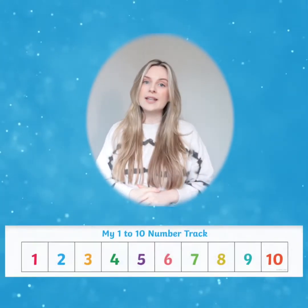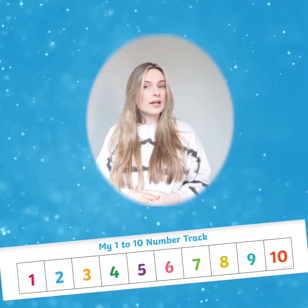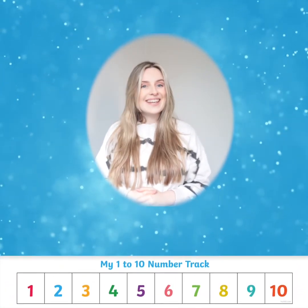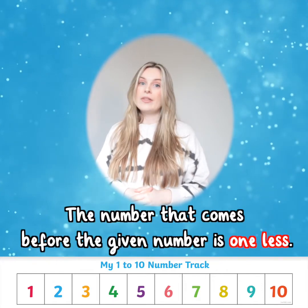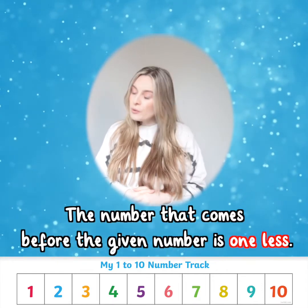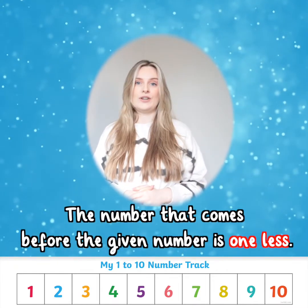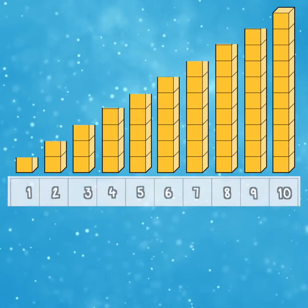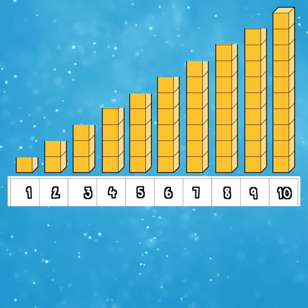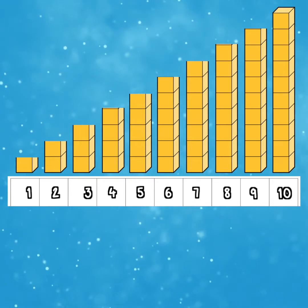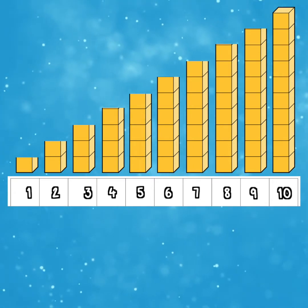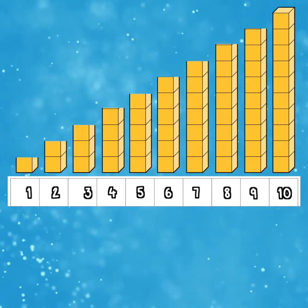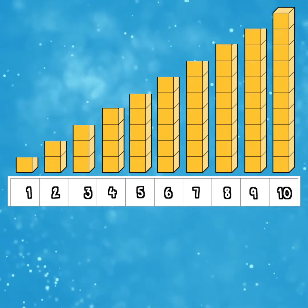A number track is a helpful tool to help find one less. It's important to remember that the number that comes before the given number is one less. Looking at this number track, notice the cubes above representing each number. This will help us when finding one less.